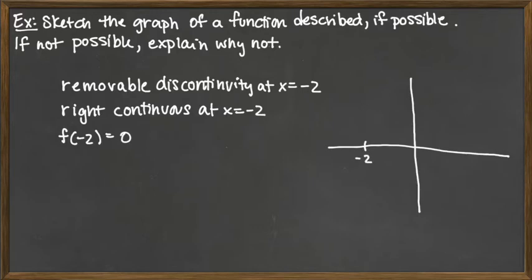It's talking about removable discontinuity, right continuous, and the function value is what's happening at x equals negative 2. So I'm going to go ahead and plot the point negative 2 comma 0, because that would then satisfy our third criteria there. We need to have the function value at negative 2 be equal to 0.